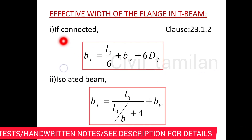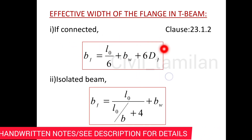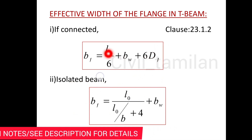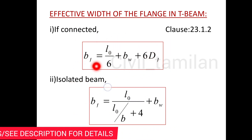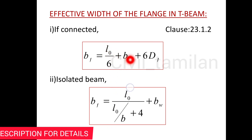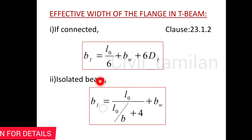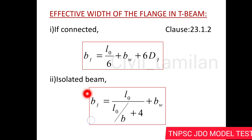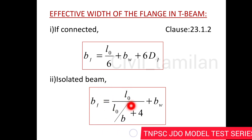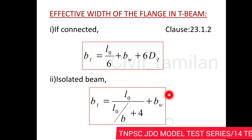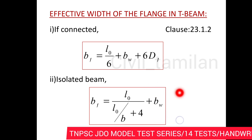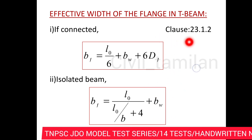If the beam is connected, it is a T-beam. Bf is equal to L0 divided by 6, plus Bw, plus 6df. If it is an isolated beam, Bf is equal to the width of the slab, i.e., L0 divided by (L0/B + 4), plus Bw. Bw is the web width or breadth. This is as per clause 23.1.2.